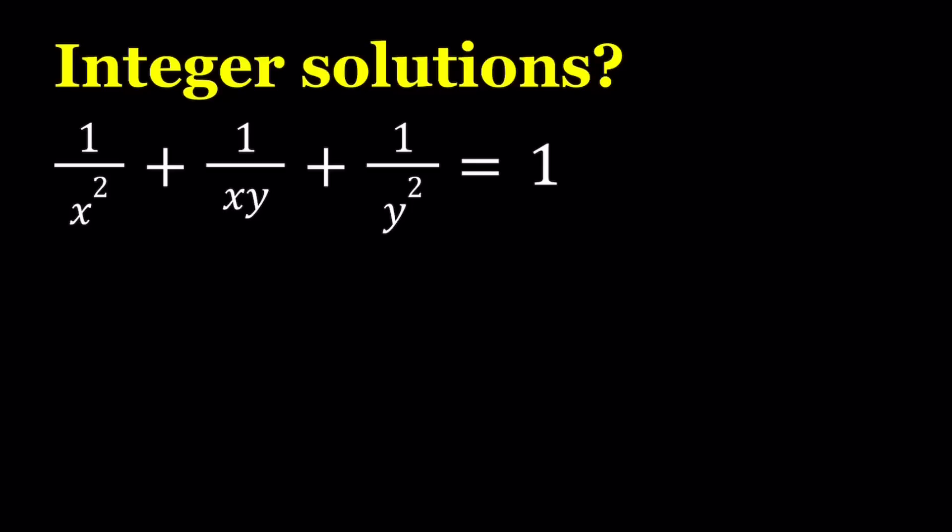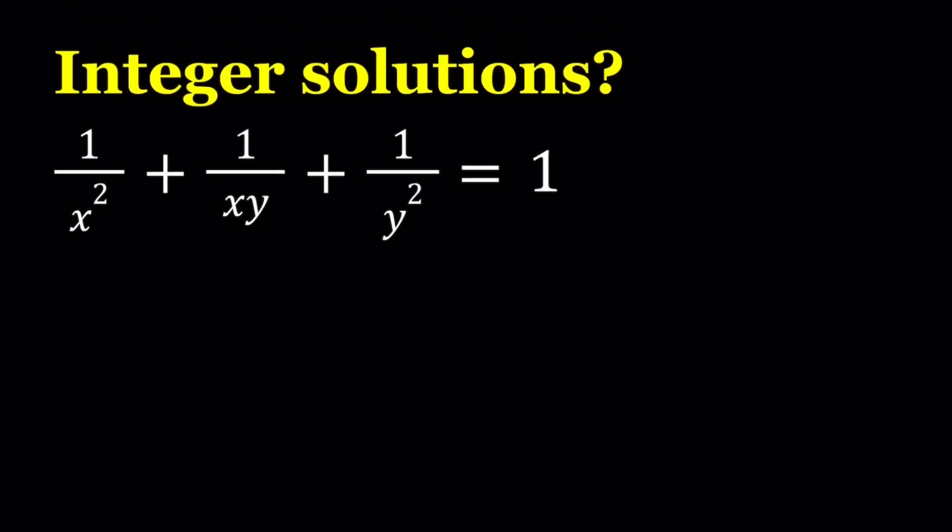I'll talk about restrictions first because I think it's important to talk about the domain. x and y, since they're in the denominator, they cannot be 0, so we have to make sure that x does not equal 0, and y does not equal 0.